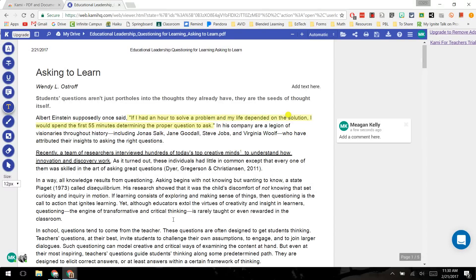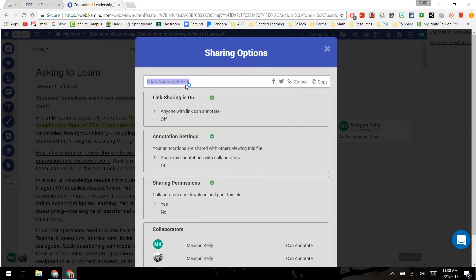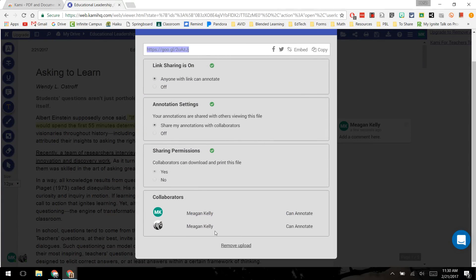To do that, they would just share the document in their Google Drive like they would normally. They'd go to their Google Drive, find the document, and share it with that user. Or they could also go up here to this share document button, and it will give them a link to that document and show who is able to collaborate on it.